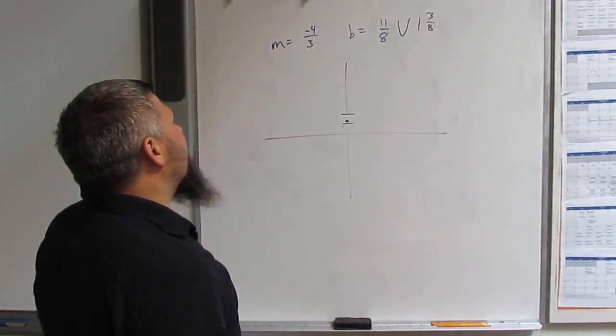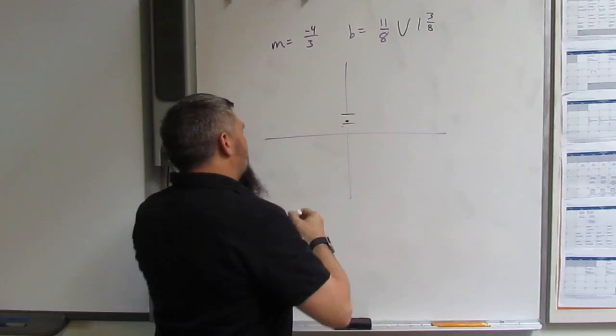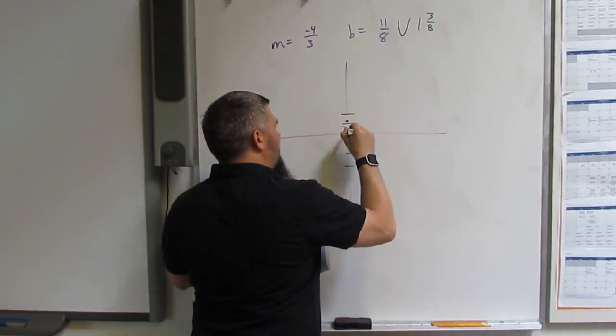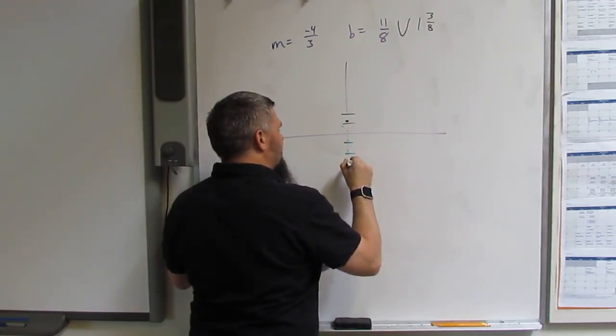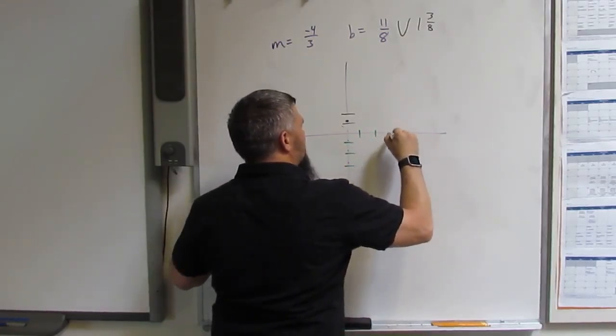And then I've got a slope of down 4. So I've got to be able to go down 1, down 2, down 3, down 4, and right 3.